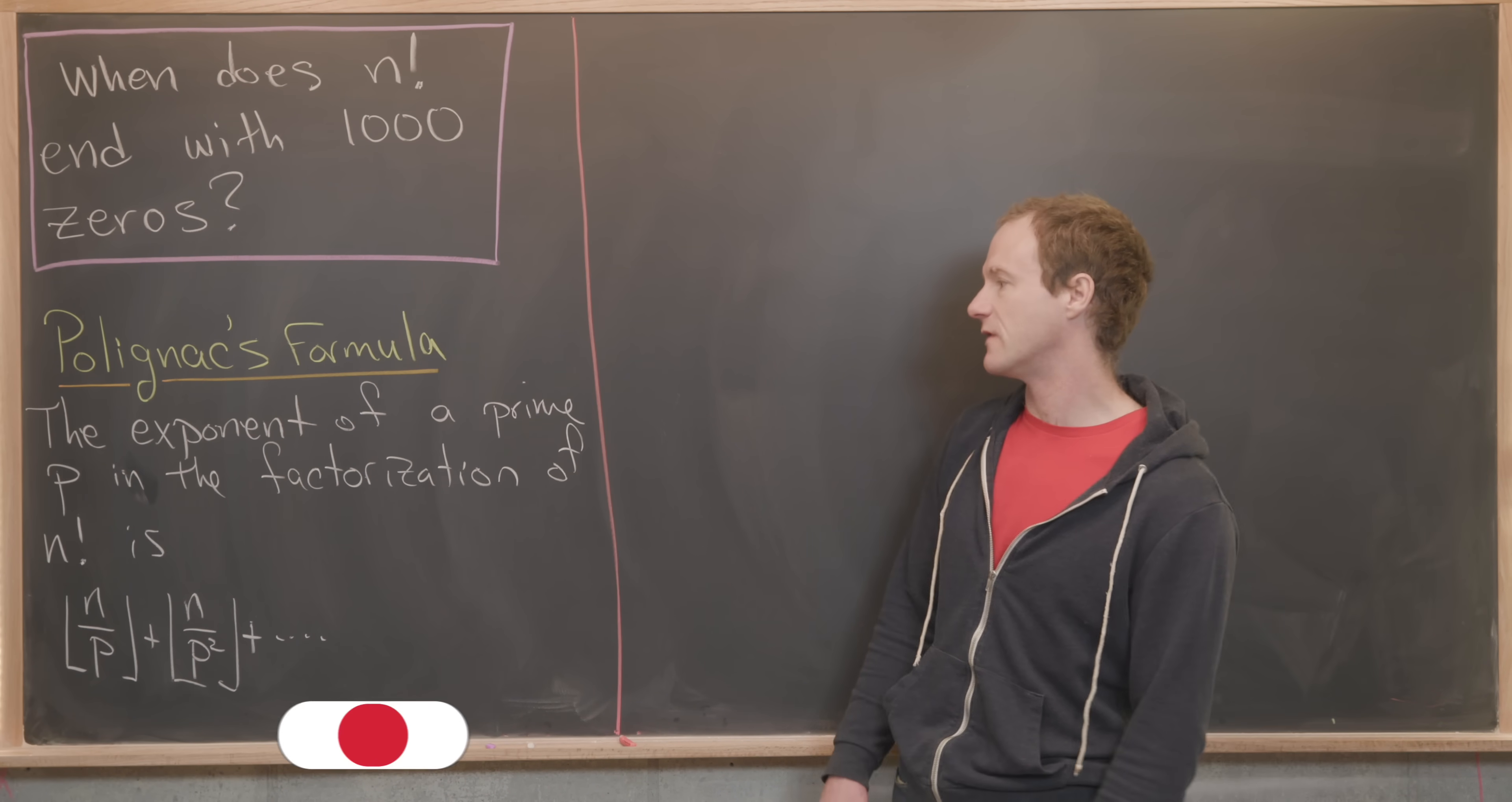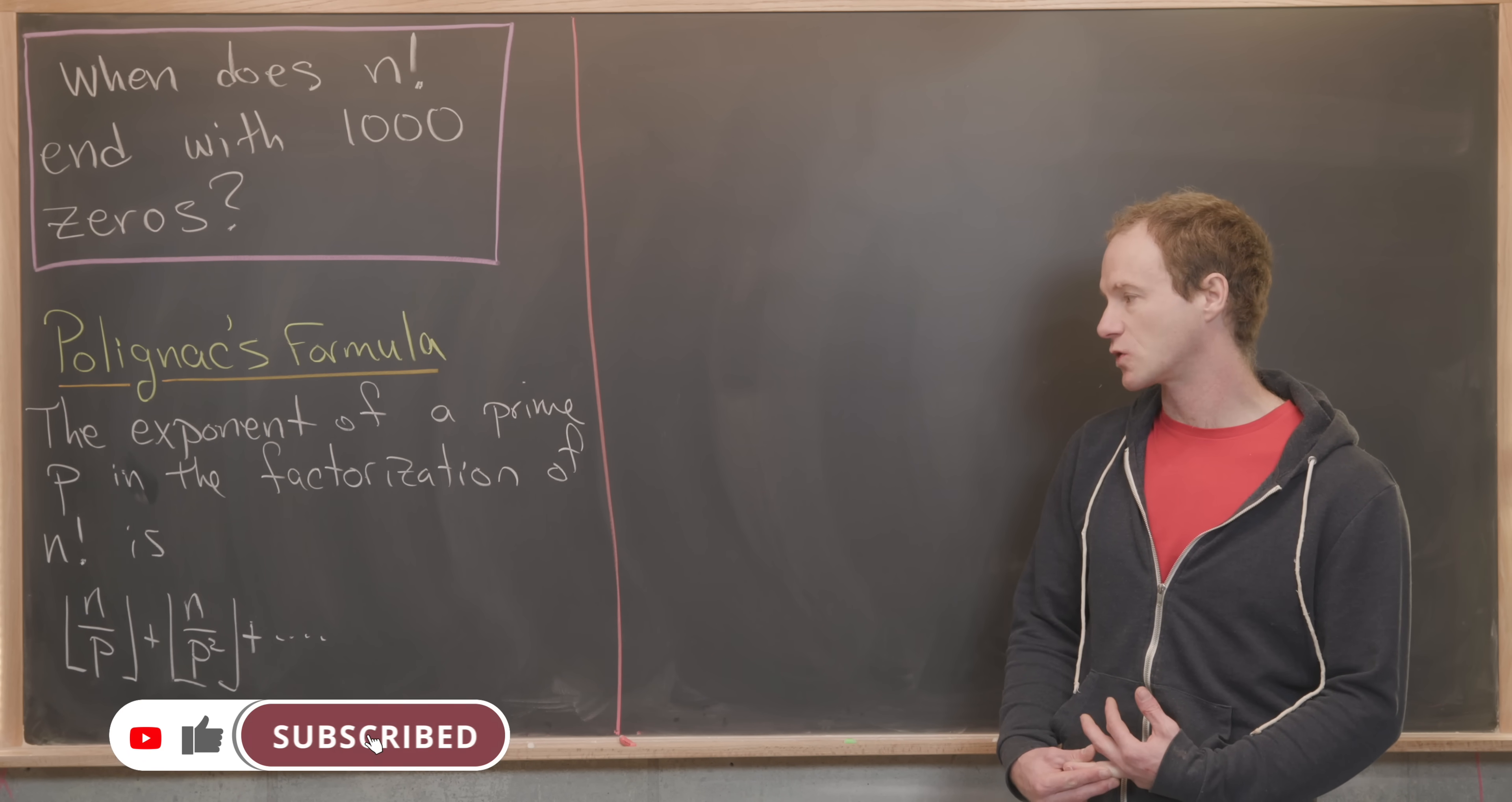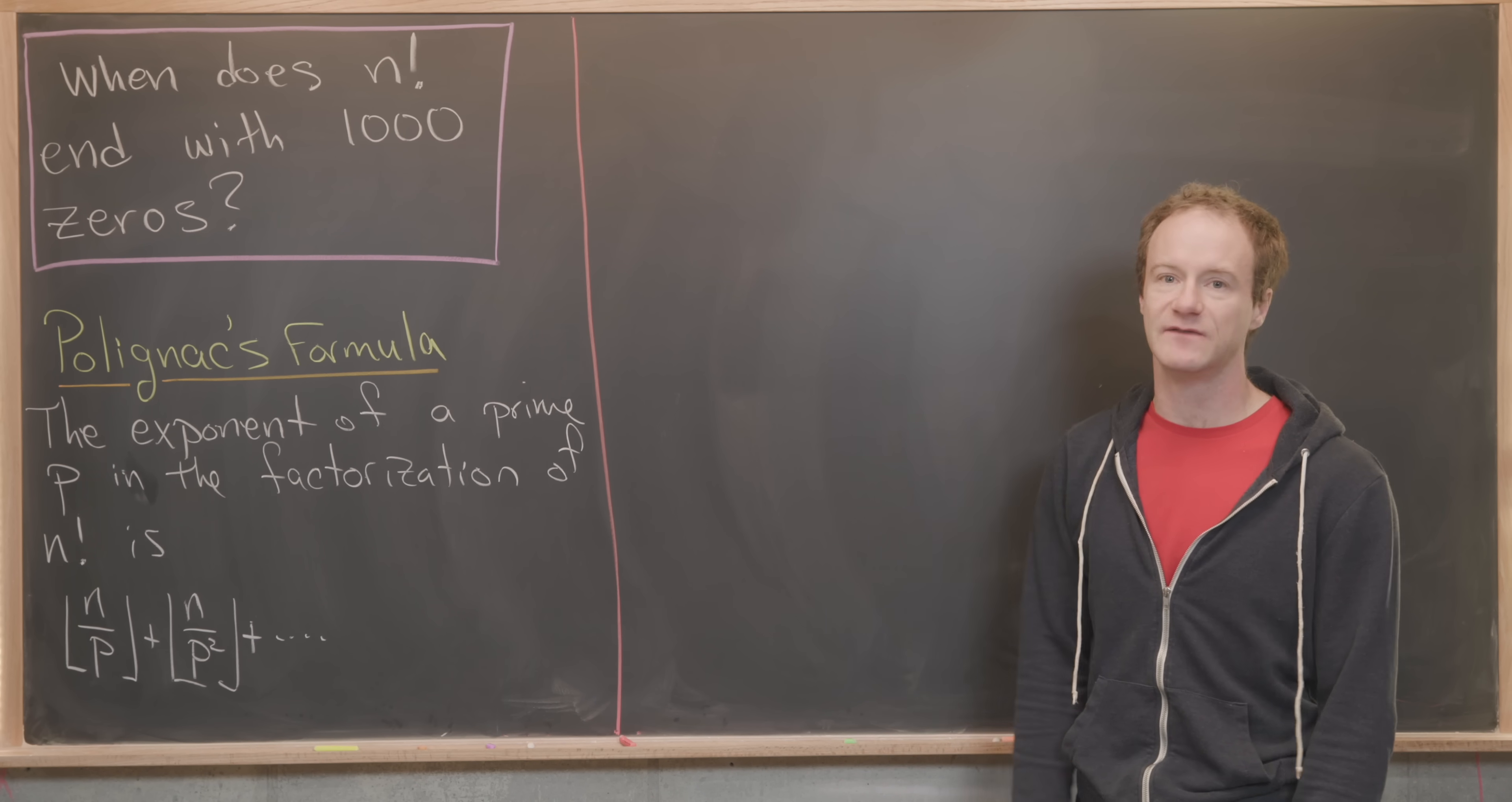It says the exponent of a prime p in the factorization of n factorial is the floor of n over p plus the floor of n over p squared plus the floor of n over p cubed, and that looks like an infinite sum.